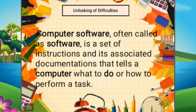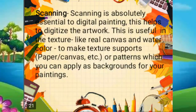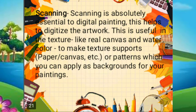Number three is computer software, also called software — it is a set of instructions and its associated documentation that tells a computer what to do or how to perform a task. Number four is scanning — scanning is absolutely essential to digital painting. It helps to digitize the artwork, and is useful for textures like real canvas and watercolor to make texture supports or patterns which you can apply as backgrounds for your paintings.